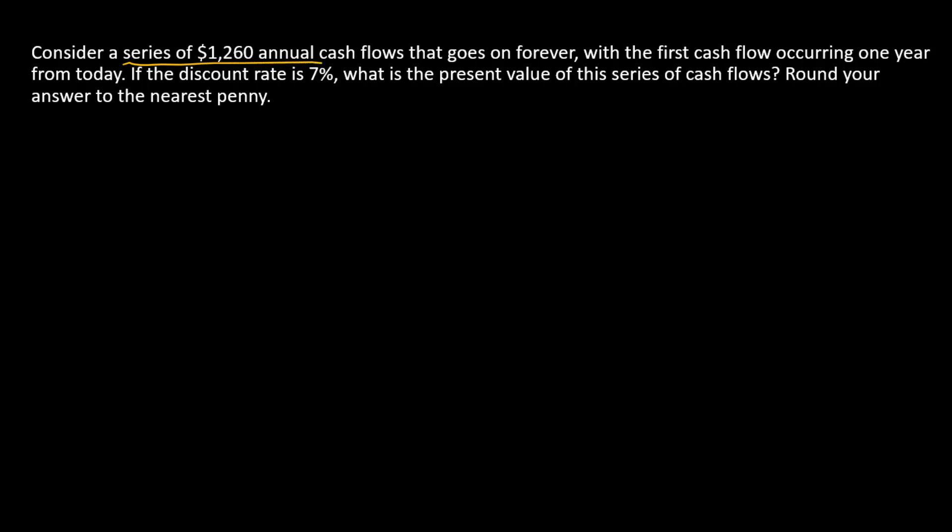We have a series of cash flows constant in the amount of $1260 that goes on forever, and the first cash flow occurs one year from today. What is this? We have a name for this, and that name is perpetuity. This is a perpetuity. Drawing it on the timeline...